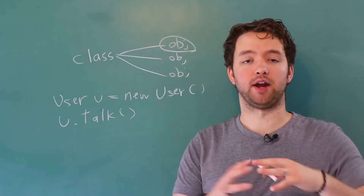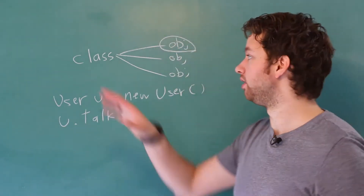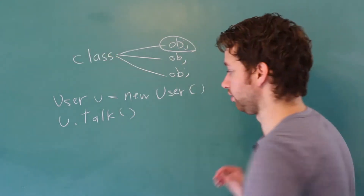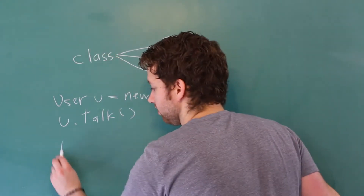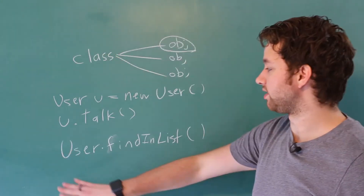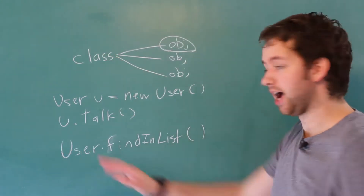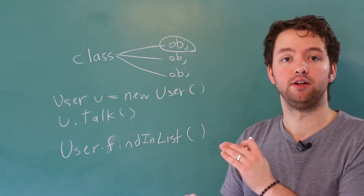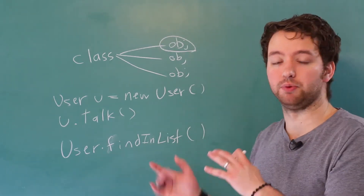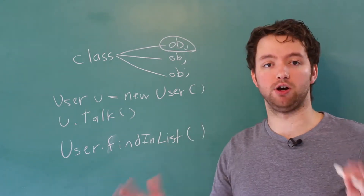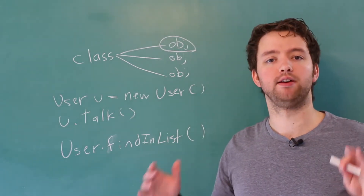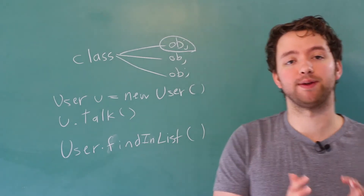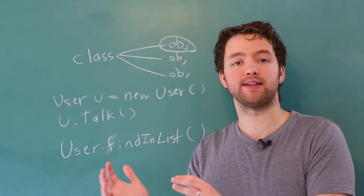A static method, on the other hand, would be on the class directly. So it would look like this — where we say "User", the class, dot, and then put the method directly there. We don't have to do it on an instance. So that is the difference between a static method and an instance method.